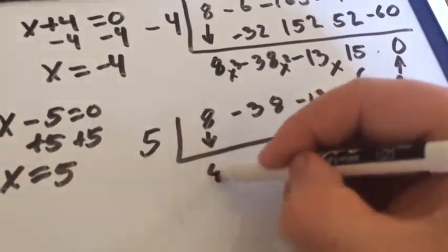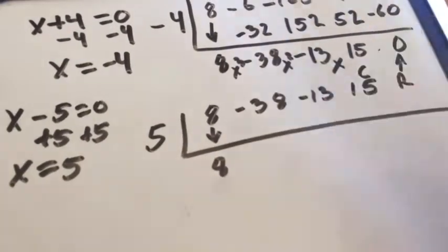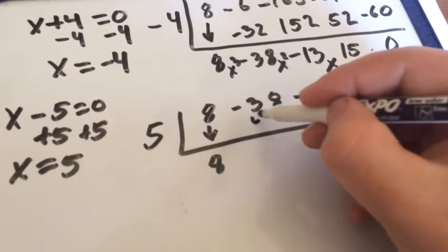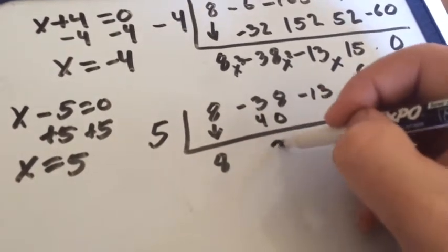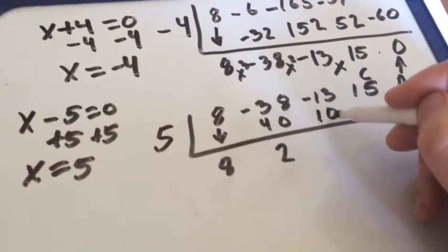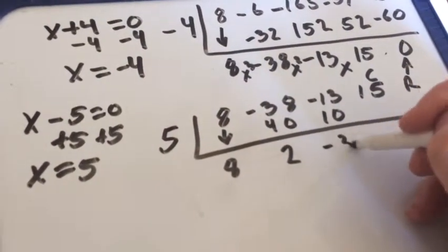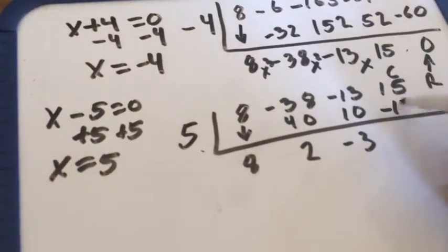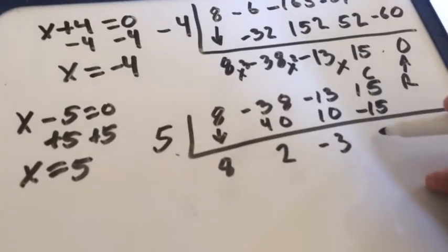First one drops down, 8. 8 times 5, 40. 40 minus 38 is 2. 2 times 5 is 10. Negative 13 plus 10 is negative 3. Negative 3 times 5 is negative 15. 15 minus 15 is 0.